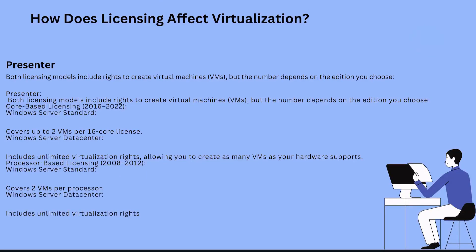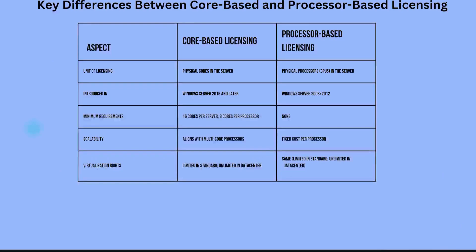Why was core-based licensing introduced? The transition was driven by the need to adapt to technological advances. Multi-core processors mean more computing power, so core-based licensing ensures you pay for the actual power of your server — unlike processor-based licensing, which ignored core counts entirely.